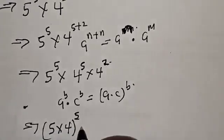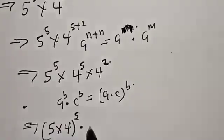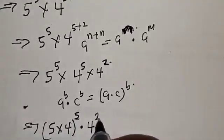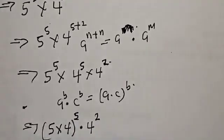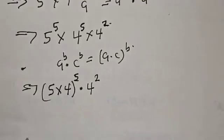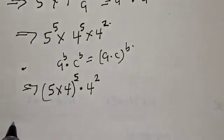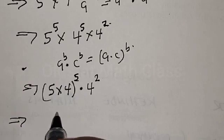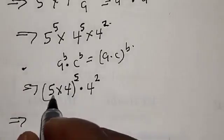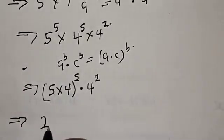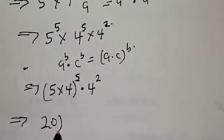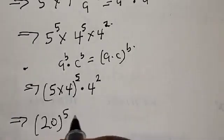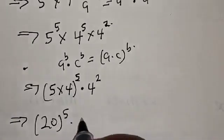Then multiply by 4 squared. This implies that we have 20 raised to power 5 multiplied by 4 squared. And 5 times 4 is 20, so we have 20 raised to power 5 multiplied by 4 squared.